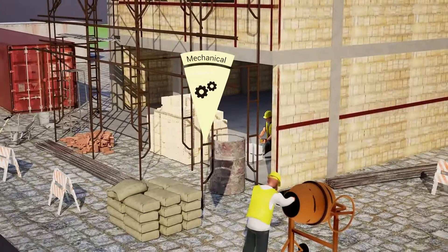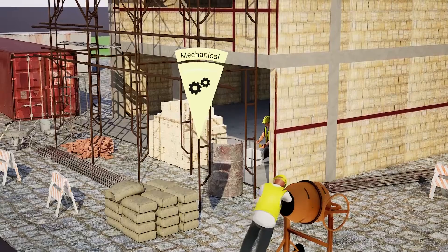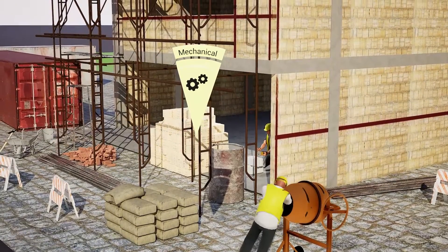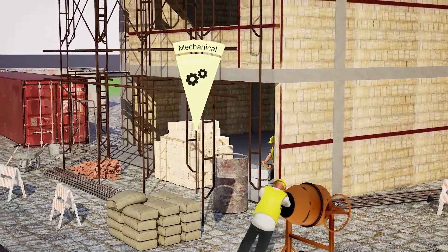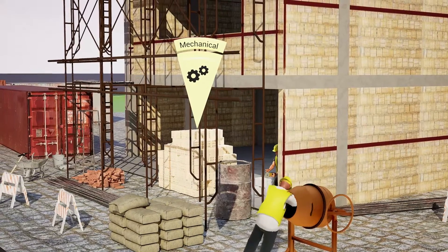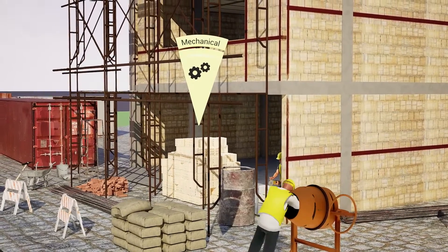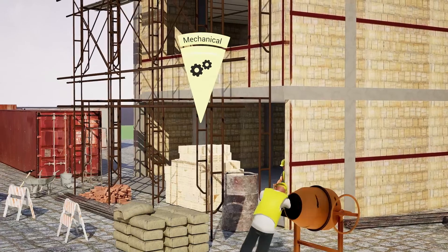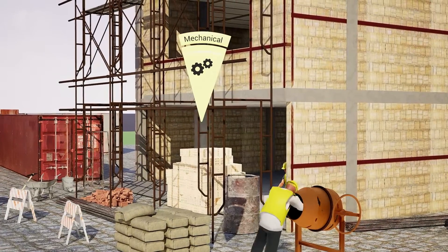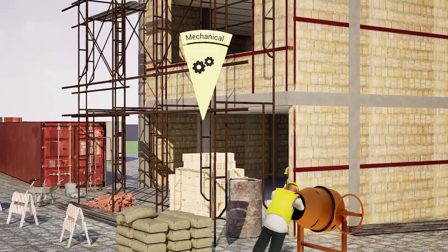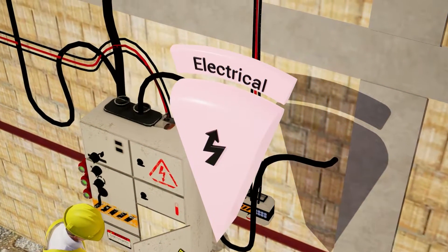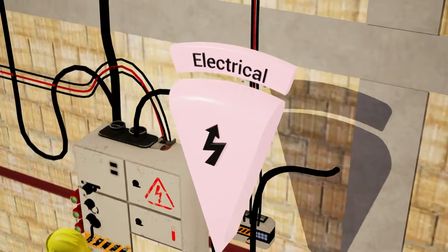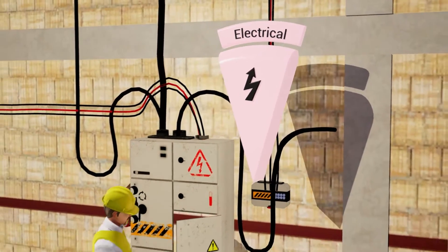Let's proceed by understanding mechanical hazards — the dangers associated with the moving parts of machinery and equipment. In industrial environments, mechanical hazards pose a serious threat. Operating heavy machinery without sufficient safety measures, neglecting routine maintenance, or disregarding correct procedures can result in severe accidents, including crushed limbs or being caught between machinery.